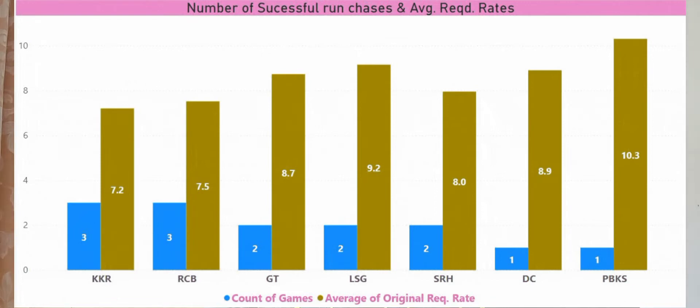On the other hand, look at Lucknow and Gujarat Titans. They have chased down two real daunting targets and that's why their average chasing rate is as high as between eight and a half to nine runs an over. So that's been a commendable start for their IPL journey.